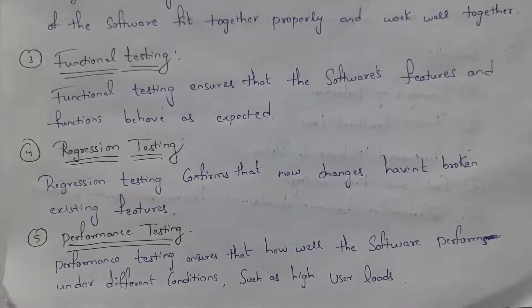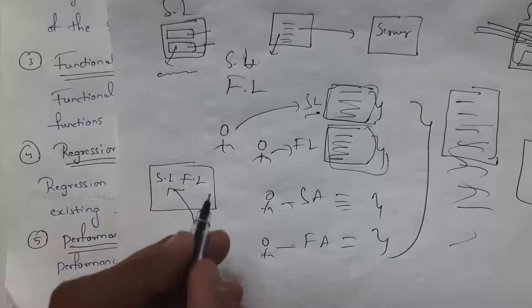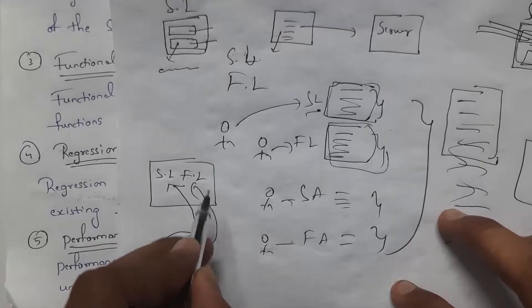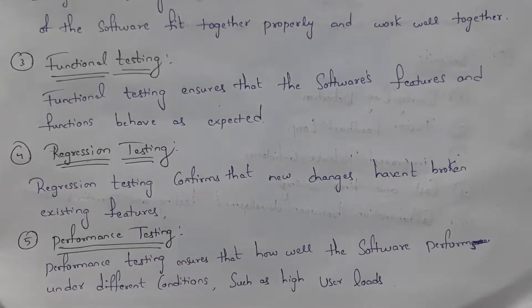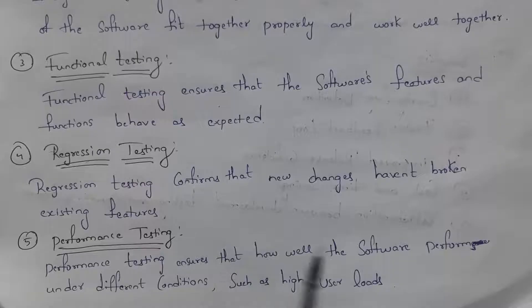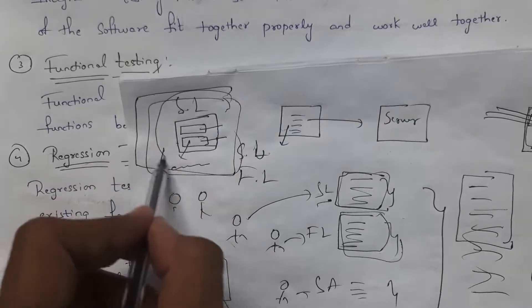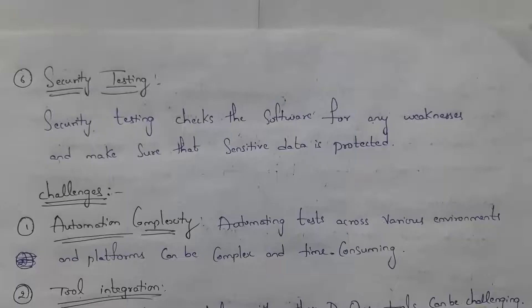The fourth is regression testing, which confirms that new changes haven't broken existing features. For example, if a website initially had a student login form and faculty login form and you later add student results, the existing features must still work well. The fifth is performance testing, which ensures how well the software performs under different conditions such as high user load — for example, when thousands of users access the website simultaneously.